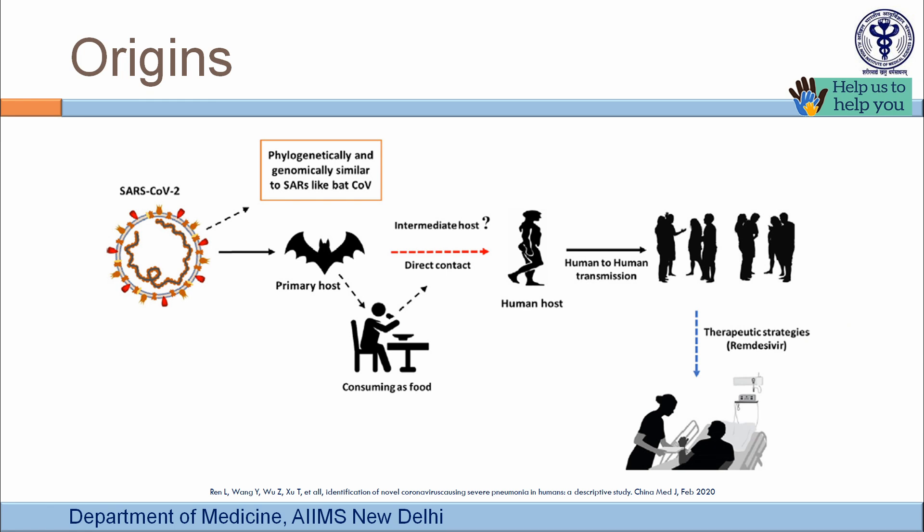Starting with the origin of the virus: SARS-CoV-2 is a novel virus thought to have originated from bats, because bats are the reservoir of most coronaviruses. Phylogenetically, 98% homology was found between bat coronavirus and the novel coronavirus.